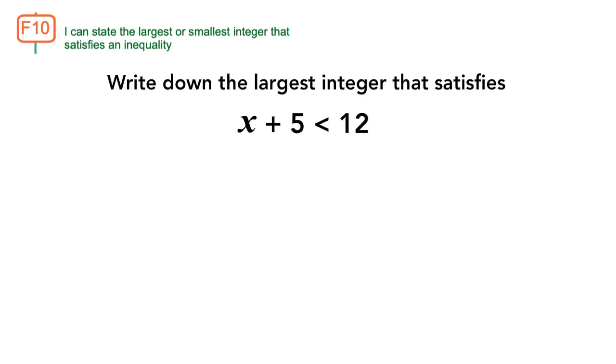Have a look at this question. Write down the largest integer that satisfies x plus 5 is less than 12. We would first need to solve the inequality. Subtract 5 from both sides, we get x is less than 7.